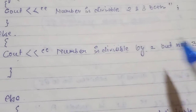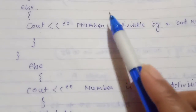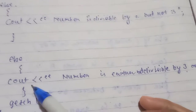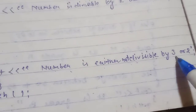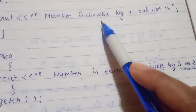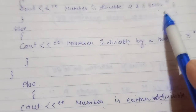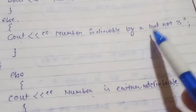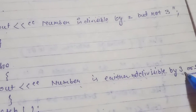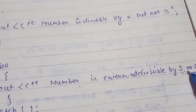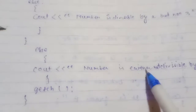If the outer if condition is also not satisfied, the final else condition outputs 'number is either not divisible by 3 or 2.' So in total, three conditions are handled: divisible by both 2 and 3, divisible by 2 but not 3, and not divisible by either 2 or 3.